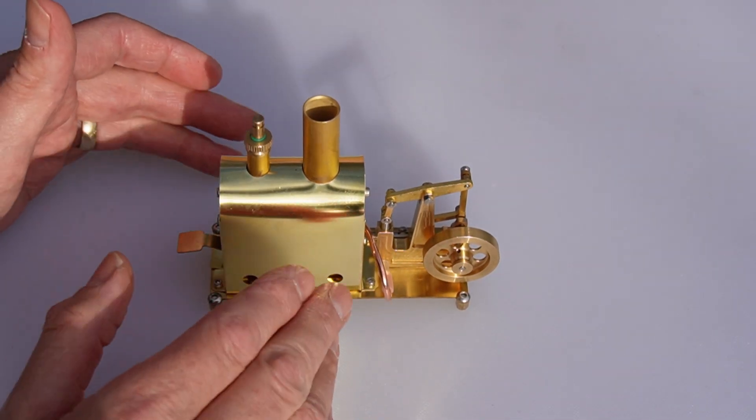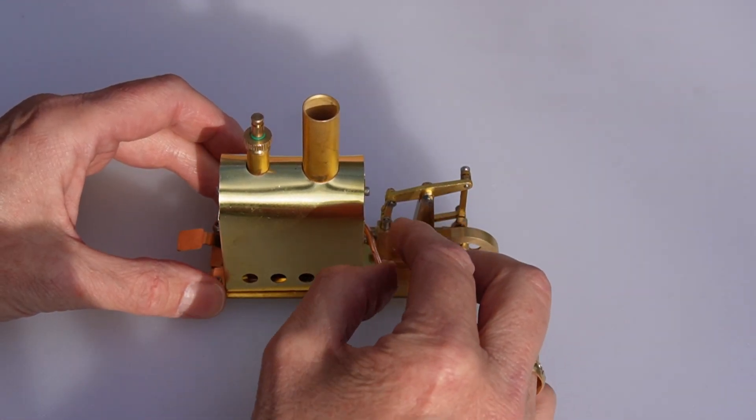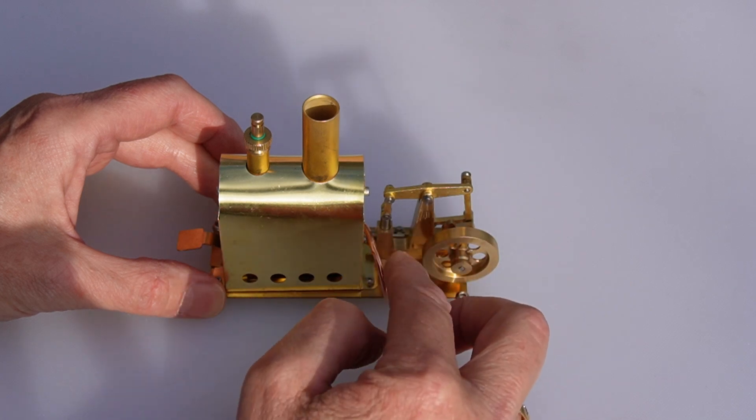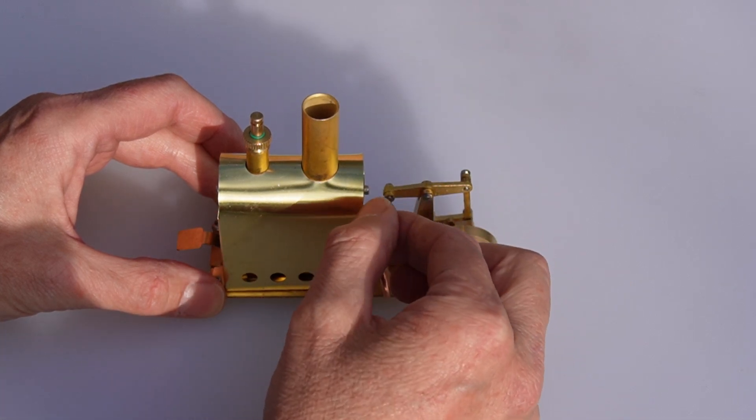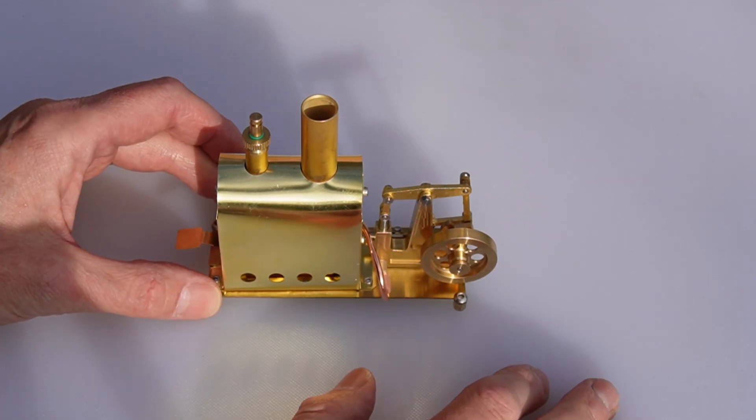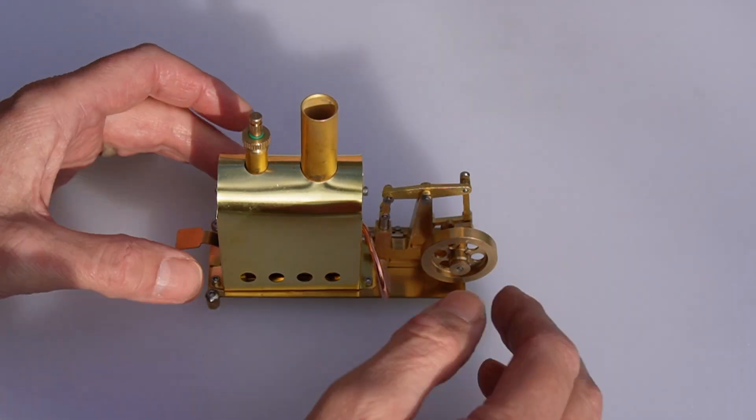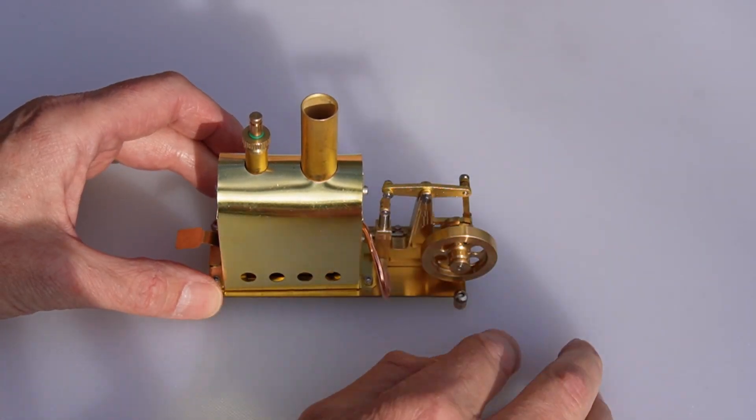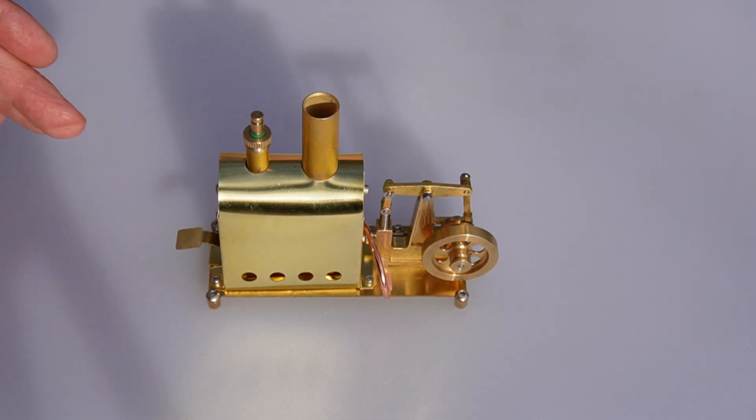So I think what I need to do now is we need to get some fuel, we need to oil everything because it will need lubrication, and then we'll fire it up and see what it runs like. It's going to run very quickly, of course, because there's no regulator or throttle, no regulation valve from the steam coming out of the boiler, so it's going to run flat out for its six to eight minutes, however long it runs for. Brilliant, can't wait to run it.